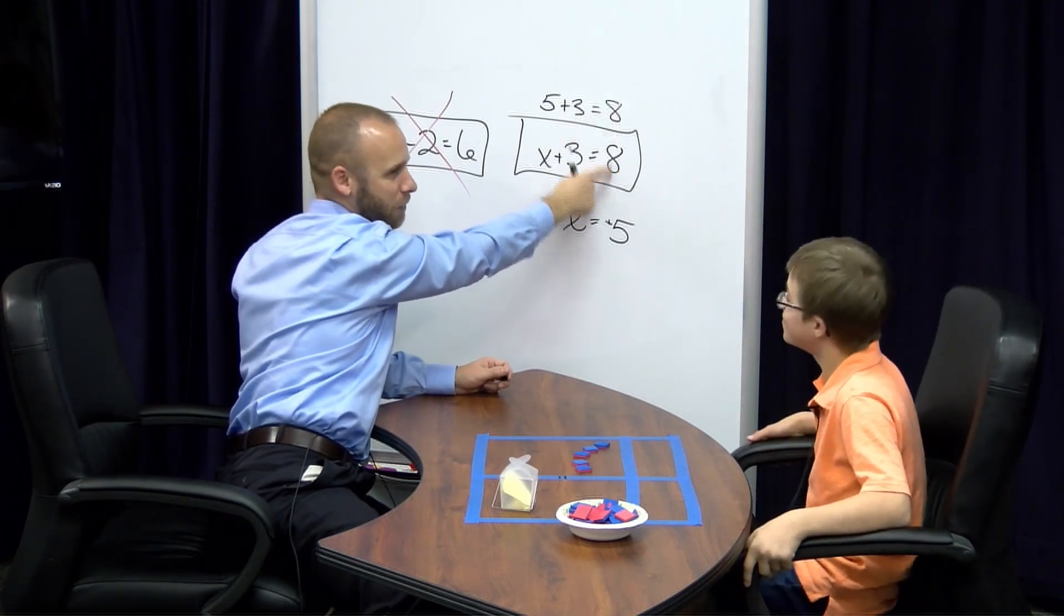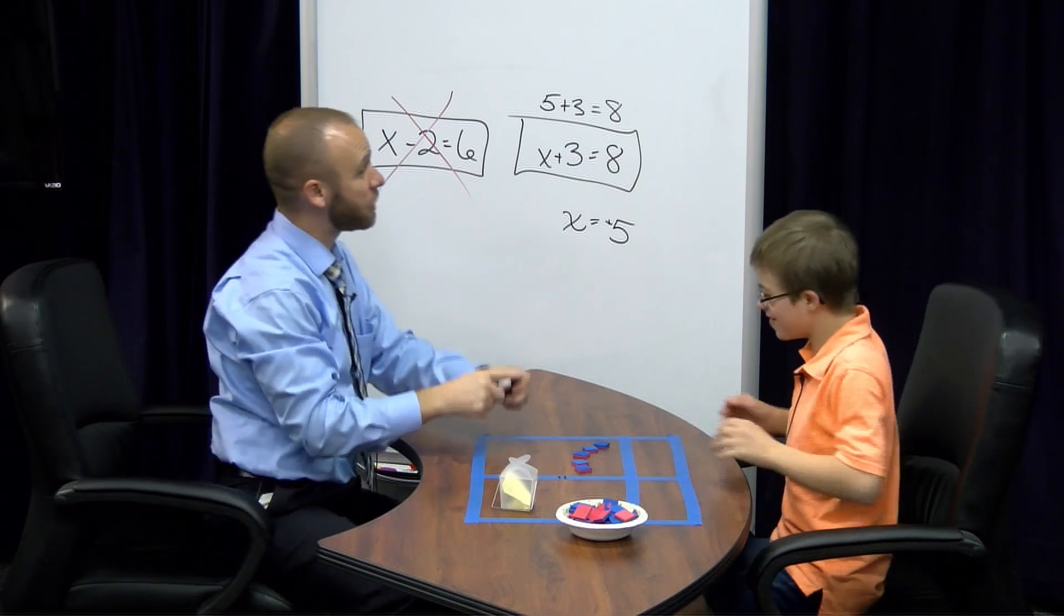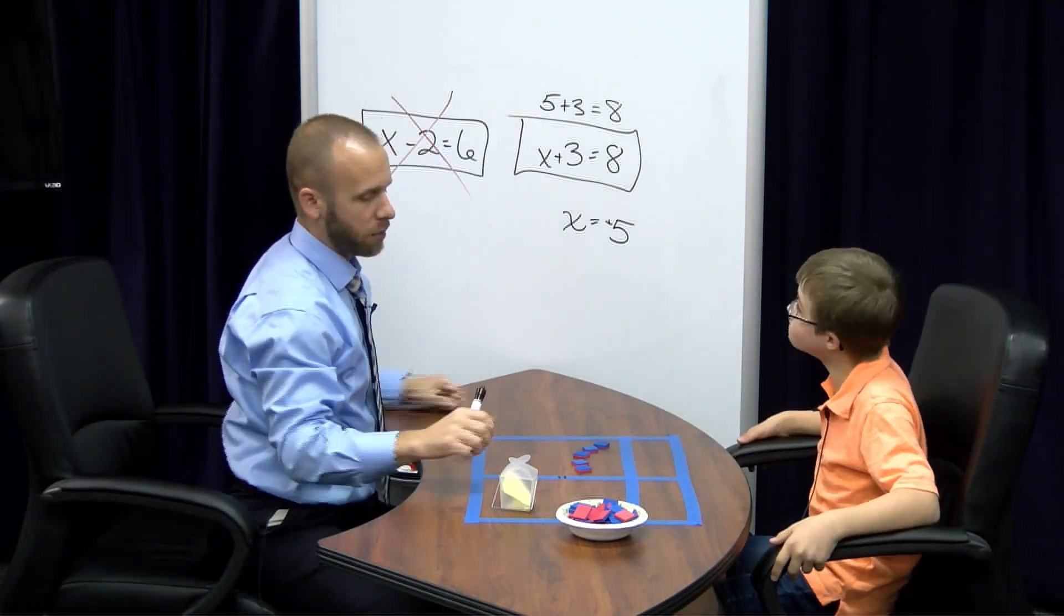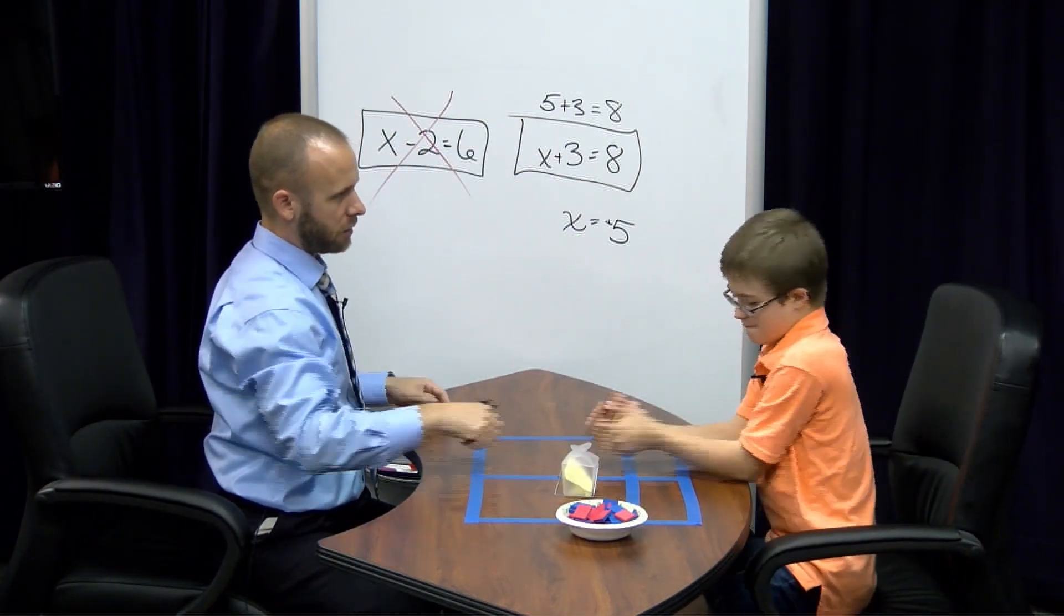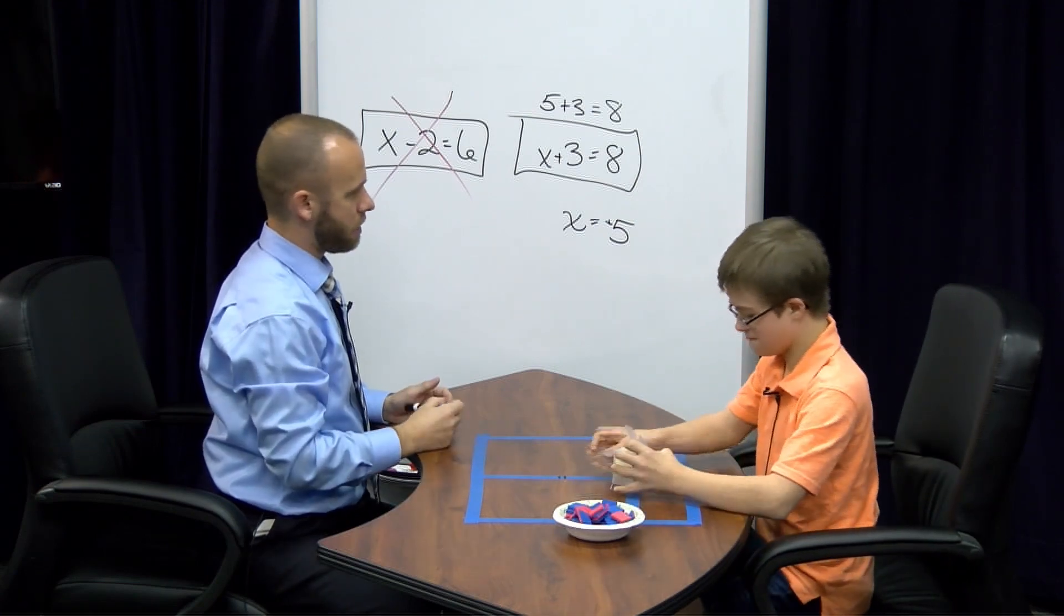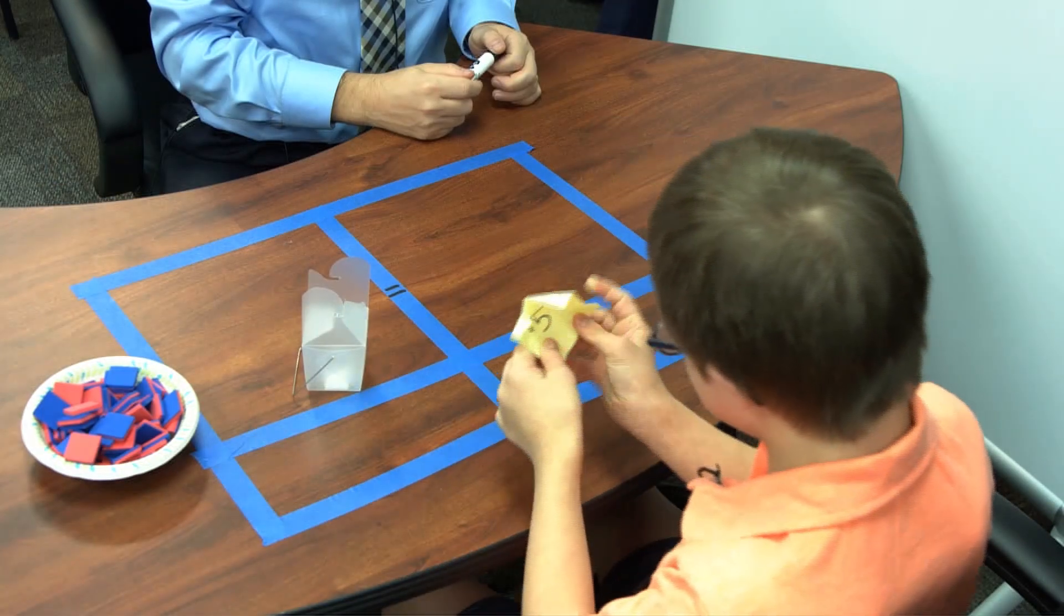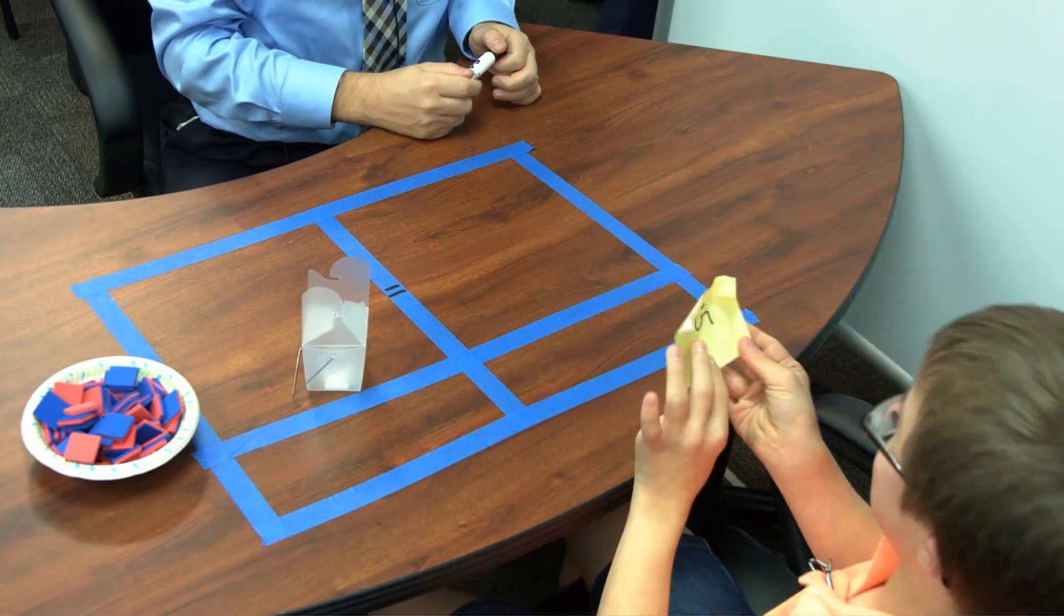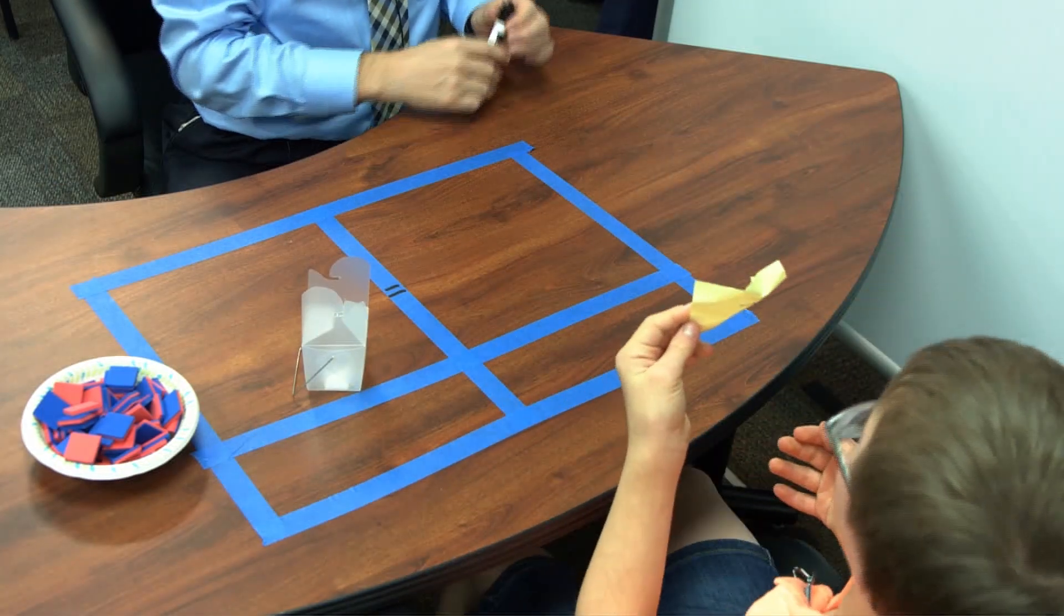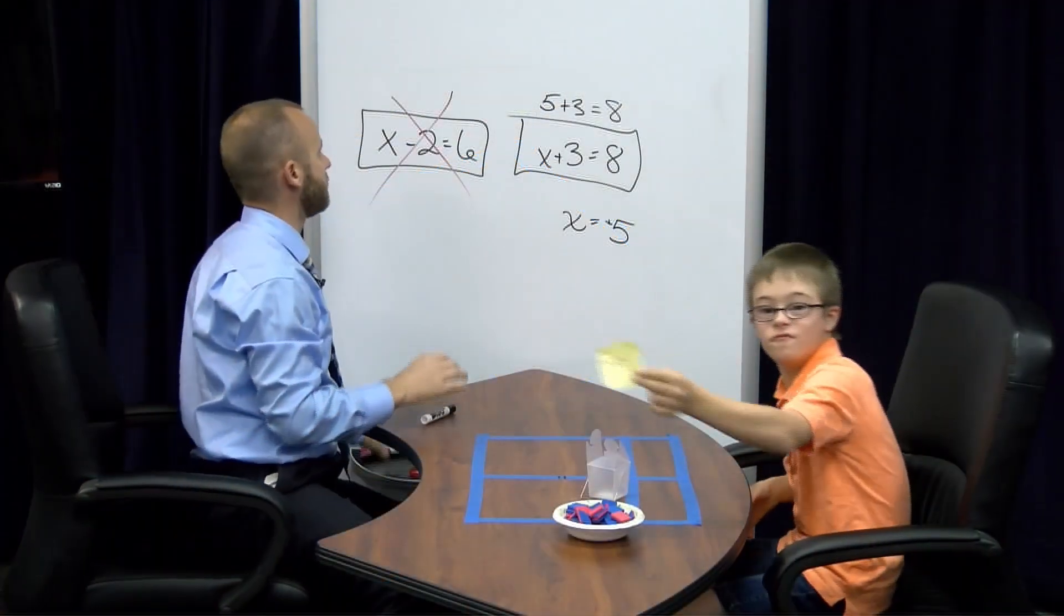We already knew it was equal to 8. Let's just make sure though. You think x is equal to 5 and we just showed that up here. But is x equal to 5 in there? What's in there? Positive 5. You got it. Nice job.